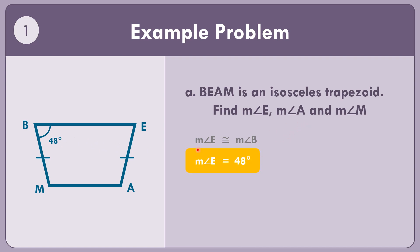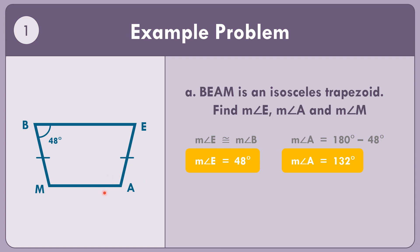How about the measure of angle A? Base angles are congruent, so the measure of angle M is congruent to the measure of angle A. Since we have no value for either, we use the fact that two consecutive angles of the legs are supplementary: 180 degrees minus 48 equals 132 degrees. So the measure of angle A equals 132 degrees. Since angle M is congruent to angle A, the measure of angle M also equals 132 degrees.